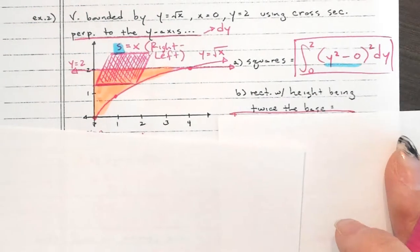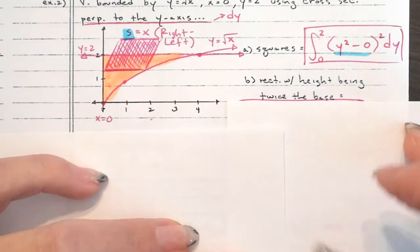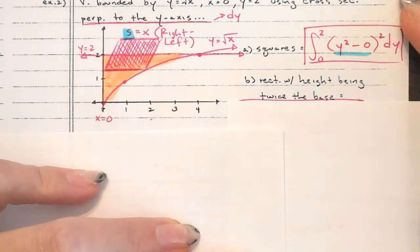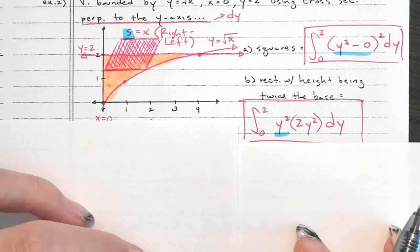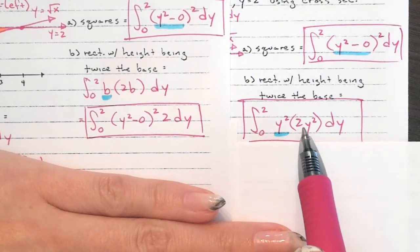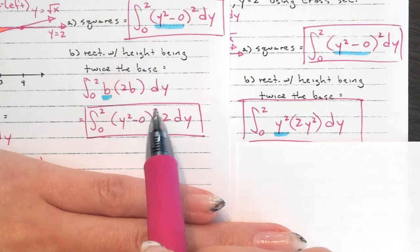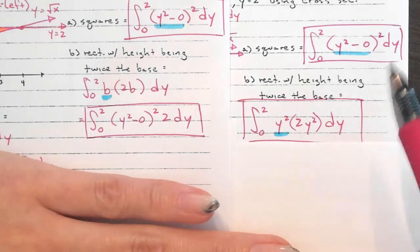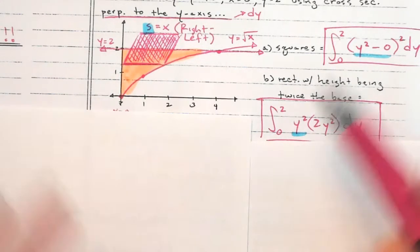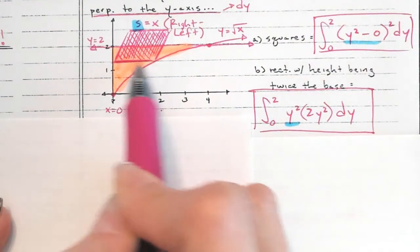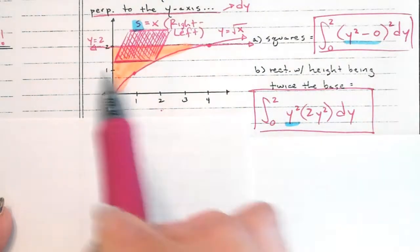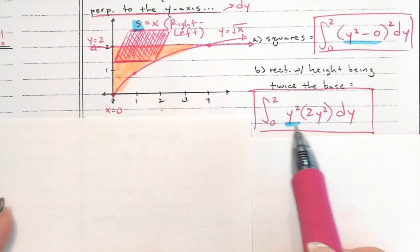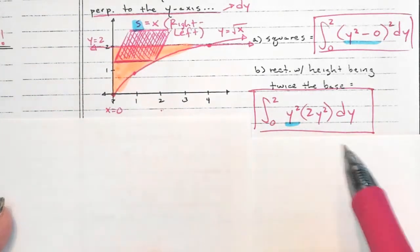The next one is a rectangle with height twice the base. The base is still my side S (left-right). If the height is twice that, it's the base times two. So the area is base times height = (y²) times 2, which gives 2y⁴. You can pull the 2 outside the integral — they're all equivalent. The blue highlighting shows this is the base of your rectangle; the height is 2 times that base.